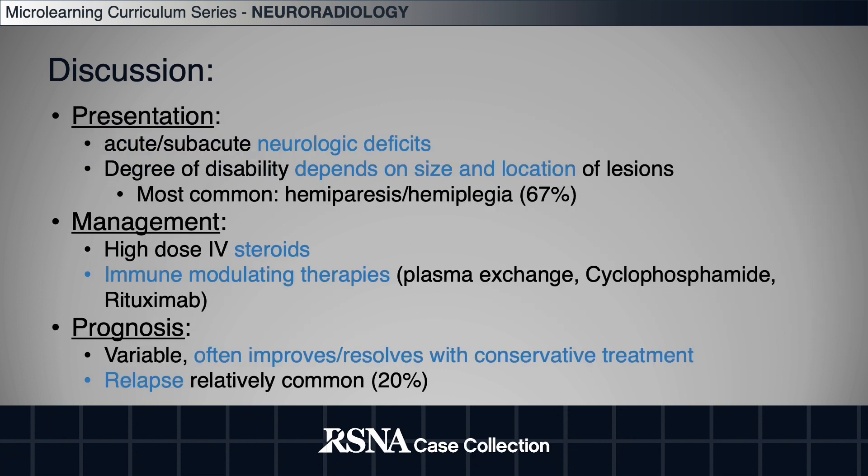Disease presentation is usually with acute or subacute neurologic deficits. The degree of disability depends on the size and location of the lesions. The most common disability is hemiparesis.